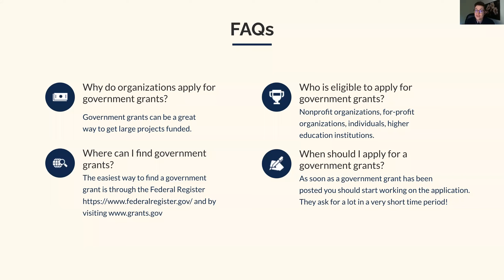As far as when you should apply for a government grant, there are deadlines all over the place, but in general as soon as a government grant has been posted, you should start working on the application. If you have applied before, you know they ask for a whole lot in a very short amount of time. So if a government grant has already dropped and it's been a couple of weeks, really think twice before you decide to get into it — you're going to want to use all of that time you've been given.